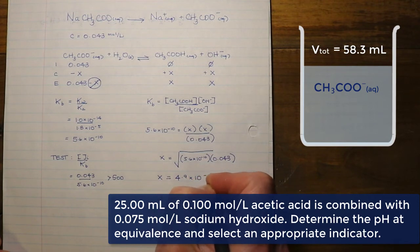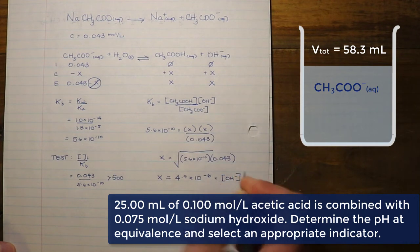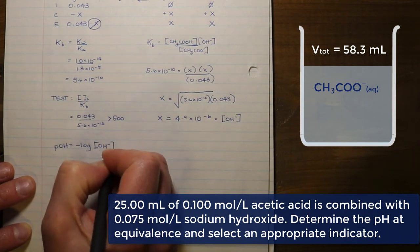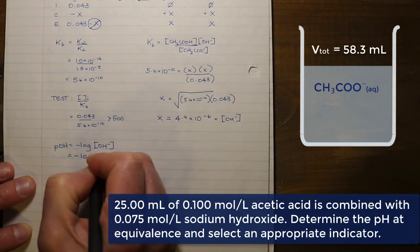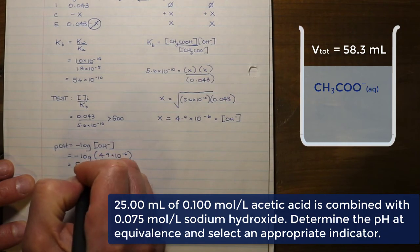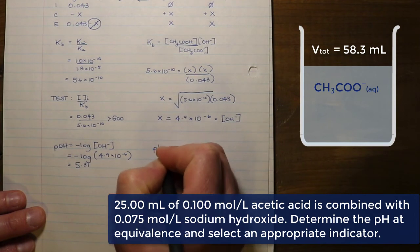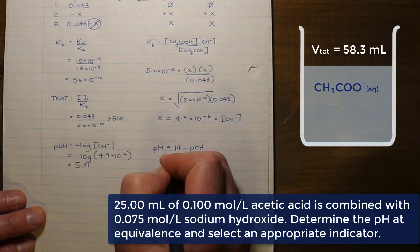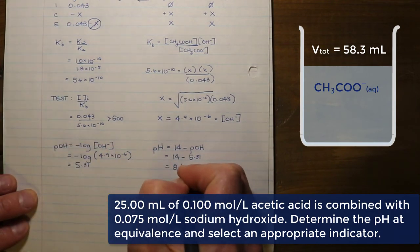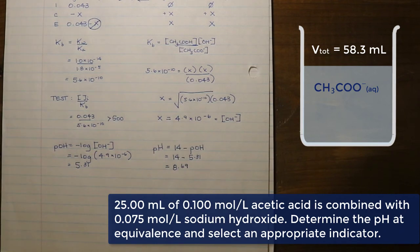This value of X represents the concentration of the hydroxide ions. Since we need pH, we first calculate pOH = −log(4.9 × 10⁻⁶) = 5.31. This makes sense since we have a weak base. Then pH = 14 − pOH = 14 − 5.31 = 8.69. This pH between 8 and 9 is consistent with the behavior of a weak base, as expected.